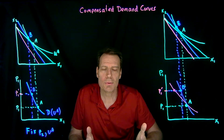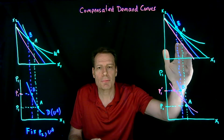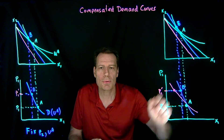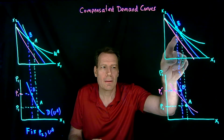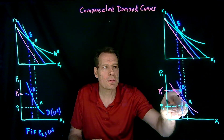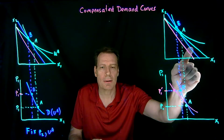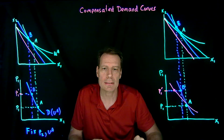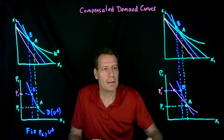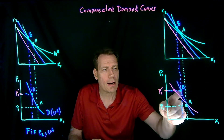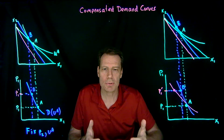What if X1 is quasi-linear? If it's quasi-linear, then changes in income don't affect how much of good X1 is consumed. Point C will appear right below point B and lie right on top of point B in the lower graph at the same price level, since these are parallel lines containing the same price. So when X1 is quasi-linear, the regular demand curve lies right on top of the compensated demand curve — the two demand curves have exactly the same shape.